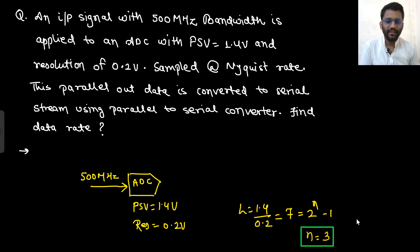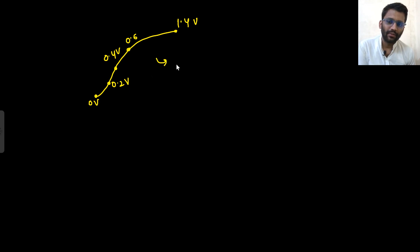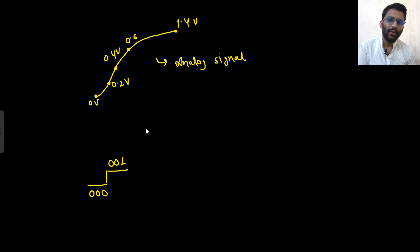If you already know the concept you can skip this part. Basically, let's assume the full-scale value is 1.4 V and the input varies from 0 to 1.4 V with a resolution of 0.2 V. So the levels are 0, 0.2, 0.4, 0.6 V and so on. For 0 to 0.2 V the digital output maps to 000; from 0.2 to 0.4 V it maps to 001; from 0.4 to 0.6 V it maps to 010.